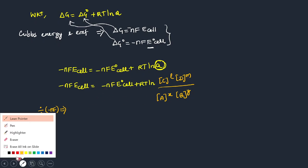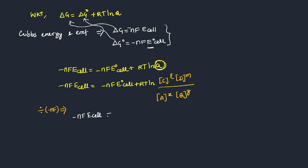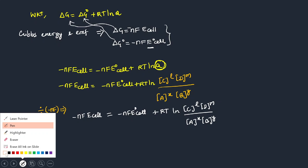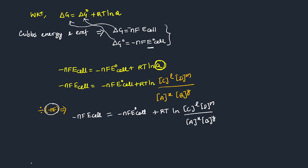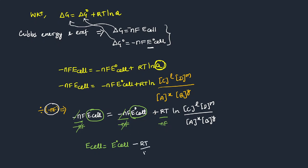I am going to divide by -nF. So: -nFE_cell = -nFE°_cell + RT·ln([C]^l[D]^m / [A]^x[B]^y). Dividing through by -nF — the -nF and -nF cancel. Then E_cell = E°_cell, and this term becomes: minus RT divided by nF, times ln([C]^l[D]^m / [A]^x[B]^y). So plus by minus n gives minus.